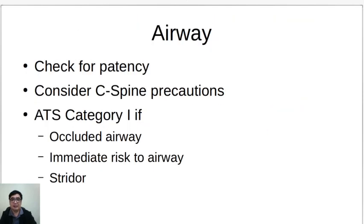For the patient's airway, you have to check for patency and consider if you need to do precautions for the cervical spine, especially for trauma patients. Triage officers would want to consider category one if the airway is occluded, if there is an immediate risk to the patient's airway, or if you hear stridor, which means that the occlusion is 75% or greater.